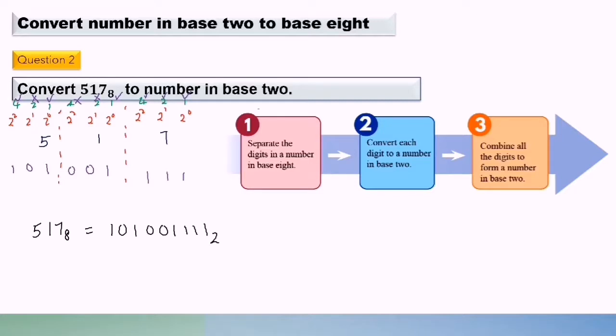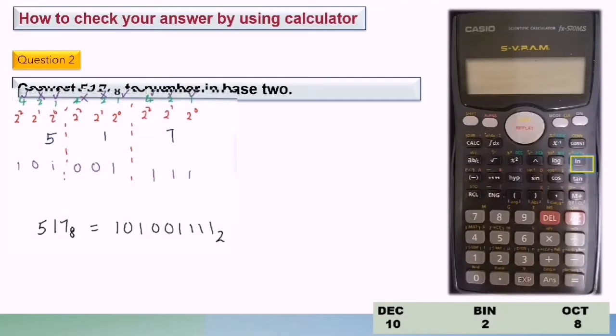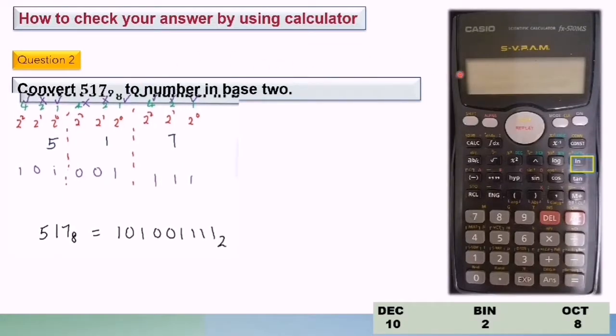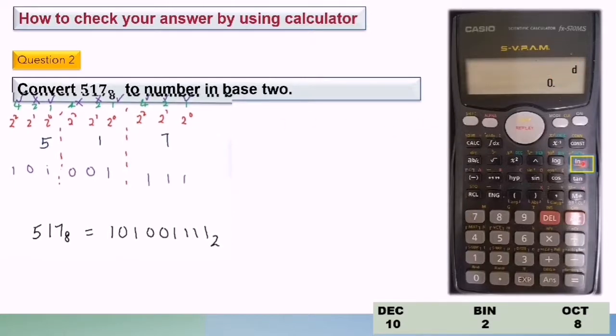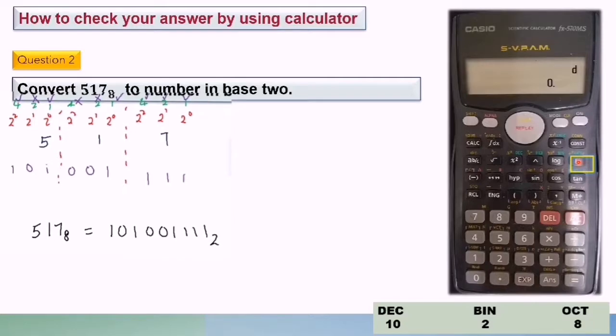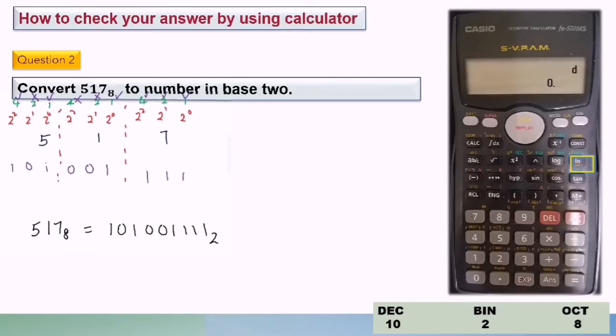So now again, we learn how to check our answer. Now we need to check the answer. Make sure your calculator is in base function. So this is base time. So we need to change to base 8. So we press the button OCT here. And key in 5, 1, 7, and press equals.